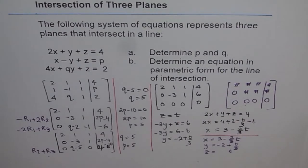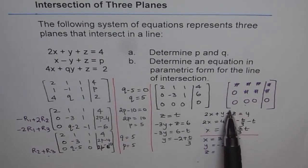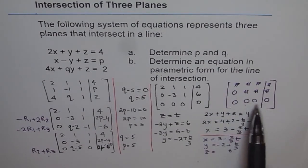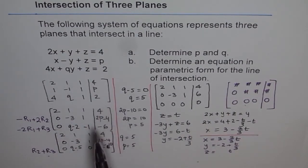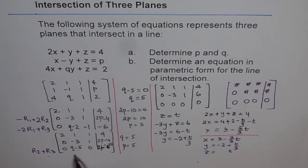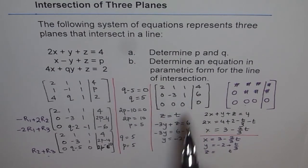I hope you understand the steps we followed. The first step is to think about what we need: a reduced matrix with the last row as all zeros. We followed the Gaussian elimination method, performing elementary row operations to reduce the augmented matrix step by step. Once the last row was 0 equals 0, we equated variables Q and P to find their values as 5, and then derived the parametric line equation.